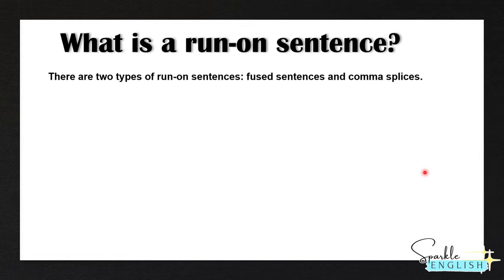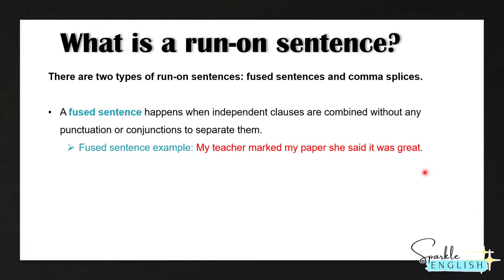There are two types of run-on sentences: fused sentences and comma splices. A fused sentence happens when independent clauses are combined without any punctuation or conjunctions to separate them. For example: my teacher marked my paper, she said it was great. Here we have two independent clauses. 'My teacher marked my paper' is one independent clause, and 'she said it was great' is a second independent clause. These are two sentences that function separately, so we can't just combine them without adding proper punctuation or a conjunction.